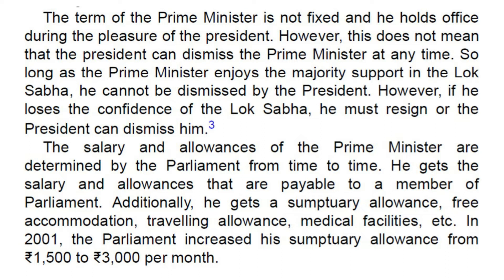The salary and allowances of the Prime Minister are determined by the Parliament from time to time. He gets the salary and allowances that are payable to a Member of Parliament. Additionally, he gets a sumptuary allowance, free accommodation, travelling allowance, medical facilities, etc. In 2001, the Parliament increased his sumptuary allowance from Rs. 1,500 to Rs. 3,000 per month.